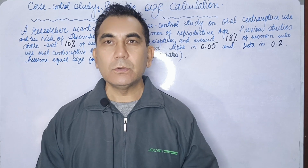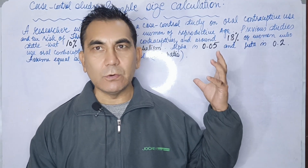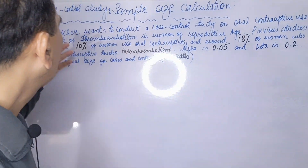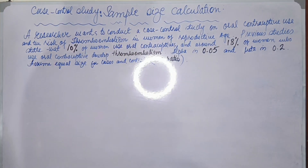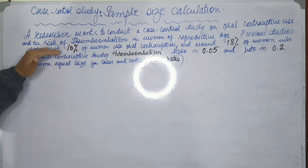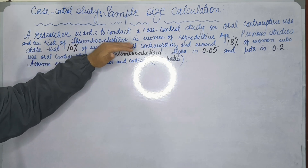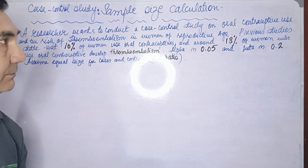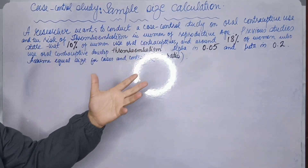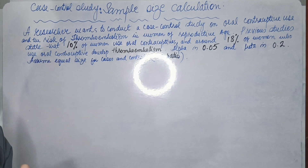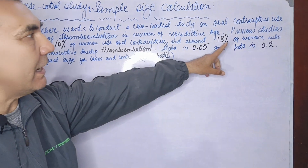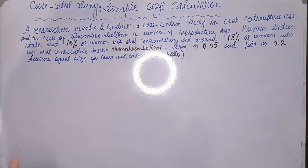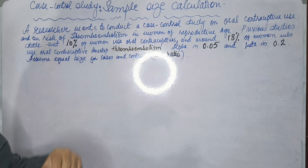Let's go through the scenario written here. A researcher wants to conduct a case-control study on oral contraceptive use and the risk of thromboembolism in women of reproductive age. Previous studies state that 10% of women use the contraceptive, and around 18% of women who use the contraceptive develop thromboembolism.